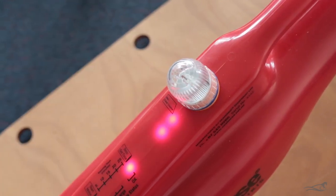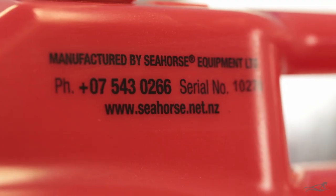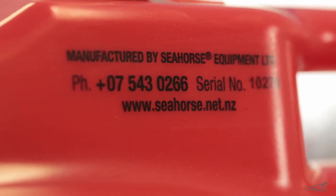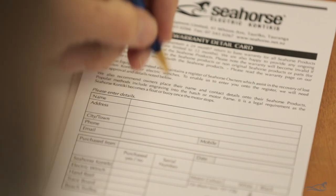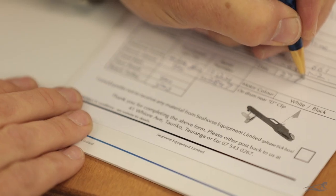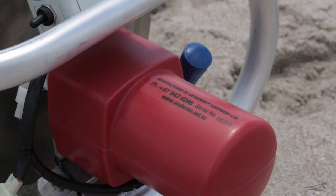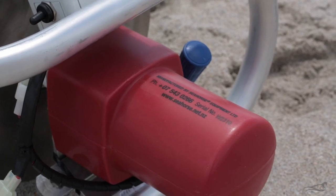On the starboard or right-hand side of the Kontiki unit is the Kontiki serial number. Please complete your warranty card with the serial number and send it to Seahorse for registration. The serial number for the winch is on the motor cover.